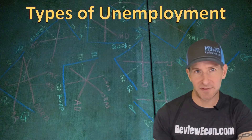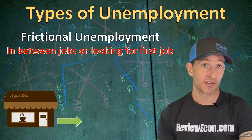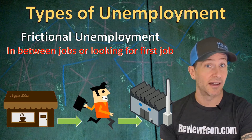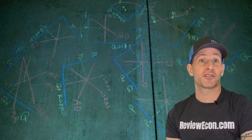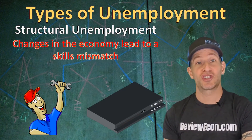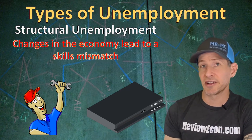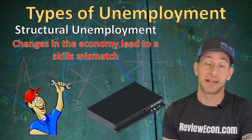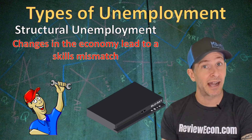There are different types of unemployment. Frictional unemployment occurs when people are in between jobs — for example, if you quit your job at a coffee shop to look for a factory job, you are frictionally unemployed during that search. It also includes people finding their first job, such as college graduates looking for work. Structural unemployment exists because changes within an economy lead to a skills mismatch. For instance, when Blu-ray disc players became cheap, the jobs fixing them were eliminated, and those workers had to learn new skills to find equally high-paying jobs.